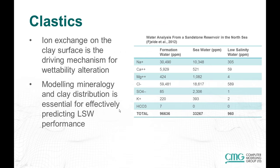In clastics, since ion exchange on the clay surface seems to be the driving mechanism, the modeling of the mineralogy and clay distribution is essential for getting good predictions of low salinity. A typical water analysis from a North Sea sandstone reservoir shows the different ion contents.